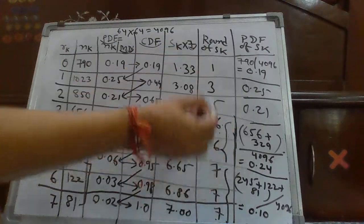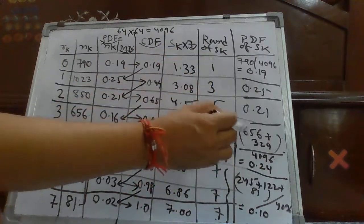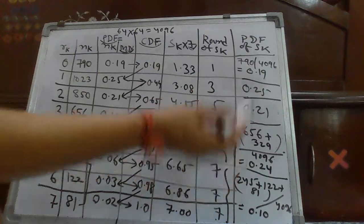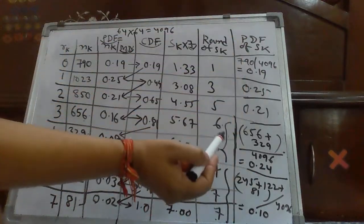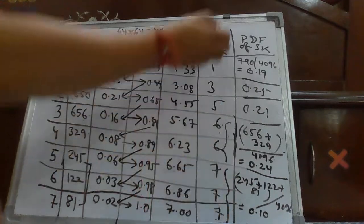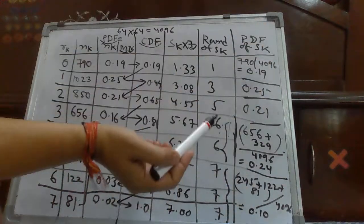And if someone tells you to plot this, simply you plot this on x axis, you take gray label 0 to 7. And on y axis, you plot this PDF value, you will get back the output of PDF of histogram equalized image.